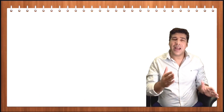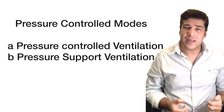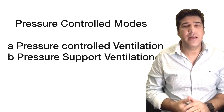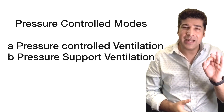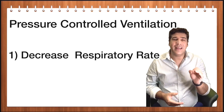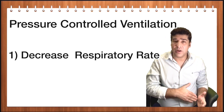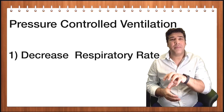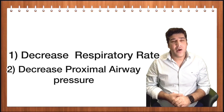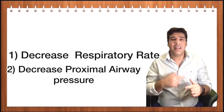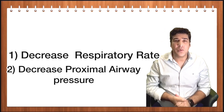Now talking about pressure control modes — pressure control ventilation and pressure support ventilation. In pressure control ventilation, the first thing you can do to get rid of auto PEEP is decrease the respiratory rate, same as in volume control ventilation, provided the patient is not triggering the ventilator. If the patient is triggering, you can increase the threshold for triggering.